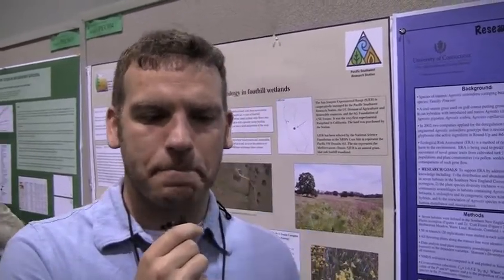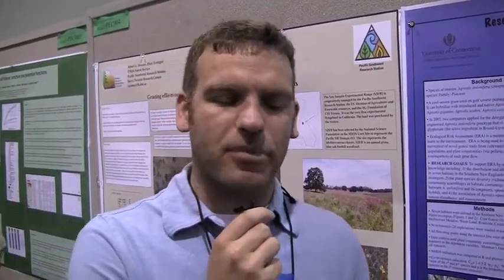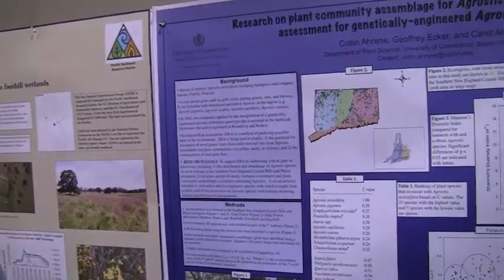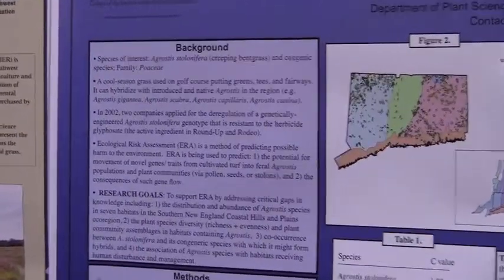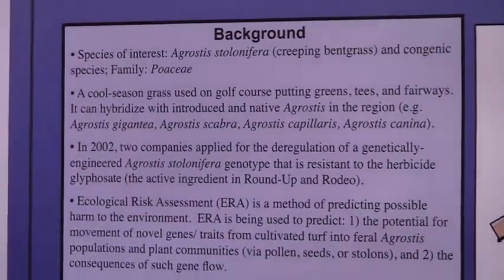Hello, my name is Colin Ahrens. I am from the University of Connecticut and this is my poster. The rationale for my work is that back in 2002 Monsanto put in an application to release herbicide-resistant creeping bentgrass resistant to Roundup, one of the most commonly used herbicides in the country, to use on golf courses to control poa annua and other weeds. What we're concerned with is the escape of that transgene into the wild, as Agrostis stolonifera has many relatives it's able to hybridize with, and all these species are actually feral.